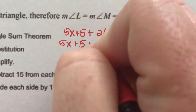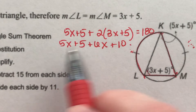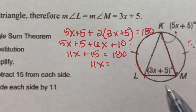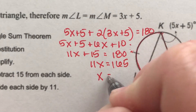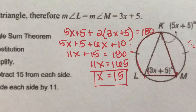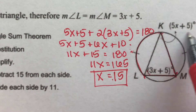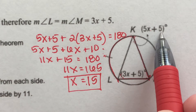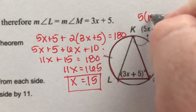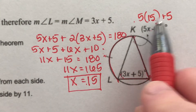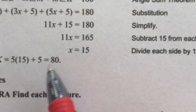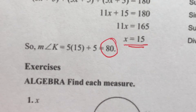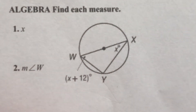So 5x plus 5 plus 6x plus 10 gives 11x plus 15 equals 180. Subtract 15: 11x equals 165. Divide both sides by 11: x equals 15. Once I know x, I plug it back in to solve for angle K. 5 times 15 is 75, plus 5 is 80 degrees. X equals 15, plug 15 in for the measure of angle K, and you get 80 degrees.